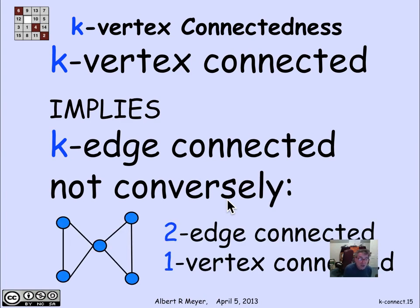Here's a graph that is two edge vertex connected, but one vertex connected. If you remove one vertex, it breaks. If you remove that vertex, it breaks. But on the other hand, it needs two edges to be cut in order to split the graph in two.